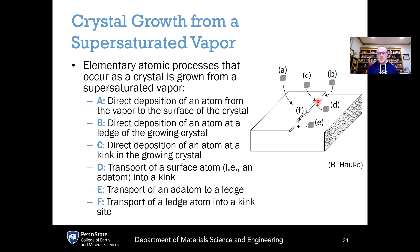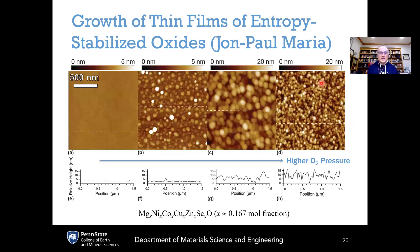Other elementary atomic processes include: D — transport of a surface ad-atom into a kink, which lowers the energy; E — the ad-atom diffusing to a ledge, which also lowers the energy but not as much as going to a kink; and F — an atom on the ledge diffusing toward a kink, another way to lower the overall energy. All of these processes occur simultaneously with different rates, energies, and entropies associated with them, each having a different effect on the free energy of the system.